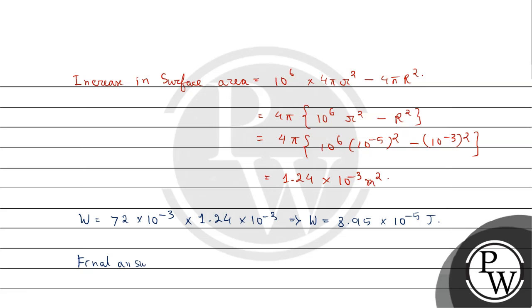So here we get the value of work done: W equals 8.95 multiplied by 10 to the power minus 5 Joule. Hope you understood it well. Best of luck, thank you.